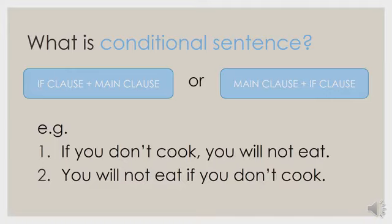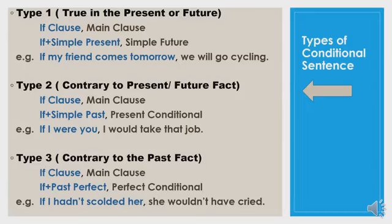Do you see the difference between these two sentences? In the first sentence, when we put the if clause at the beginning of the sentence, we should put a comma before the main clause. But when we put the main clause at the beginning, we should not put any comma before the if clause.